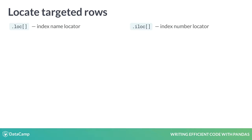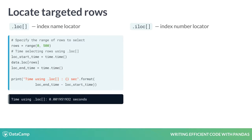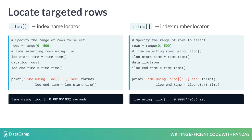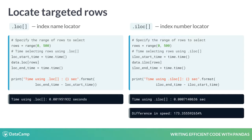One of the most useful features of the pandas library is the ease and convenience of selecting specific rows of a pandas data frame. We're going to use iloc — the index number locator — and loc — the index name locator. In this example we want to select the first 500 rows of the poker data set, firstly by using the loc function and then by using the iloc function. While these two methods have the same syntax, iloc performs almost 200% faster than loc, as it takes advantage of the order of the indices, which are already sorted.